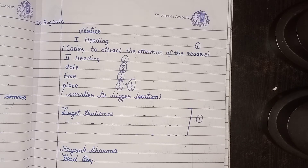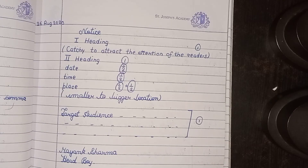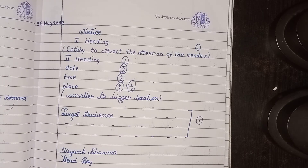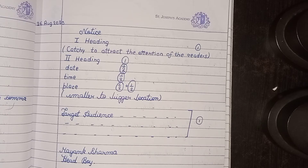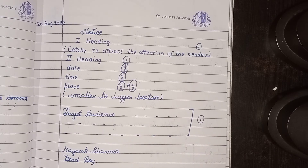Then you leave one line and target the audience. You can write that all interested students from class 9 to class 12 are to give their names to their respective class teachers on or before 15th September. You give students 10 days' time to submit their names — this is necessary, otherwise your marks can be cut. Leaving one line, you write your name followed by 'Head Boy / Head Girl.'